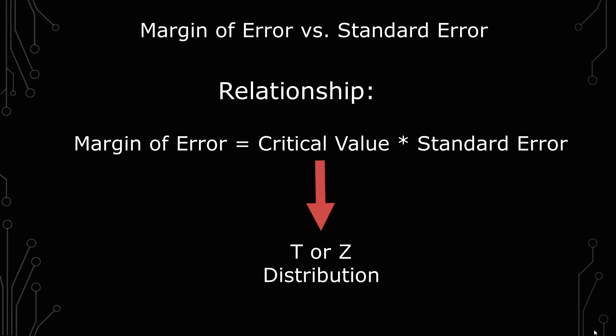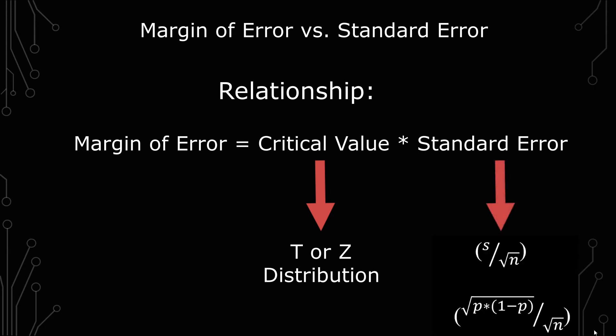The standard error depends on what you're looking at, whether you're dealing with paired, unpaired, pooled, or proportion. All those things are valid ways of getting a margin of error, depending on what method you're using.